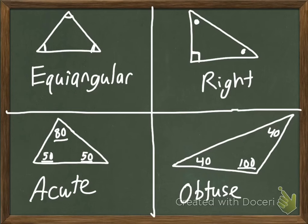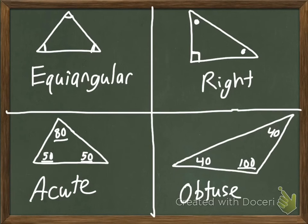To recap: an equiangular triangle has all equal angles. A right triangle has one right angle. In an acute triangle, all three angles must be acute. For a triangle to be obtuse, it needs just one obtuse angle.